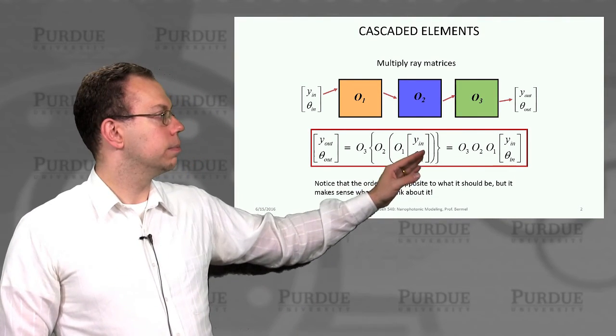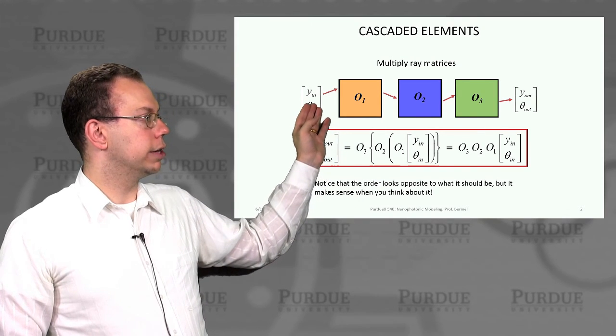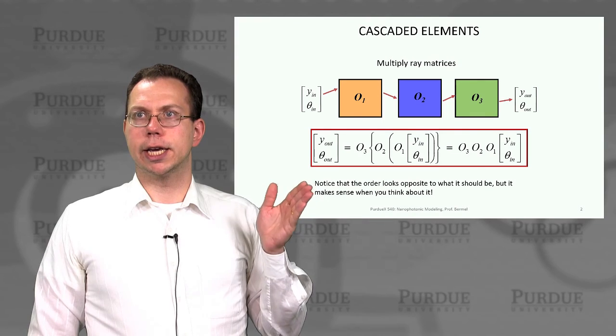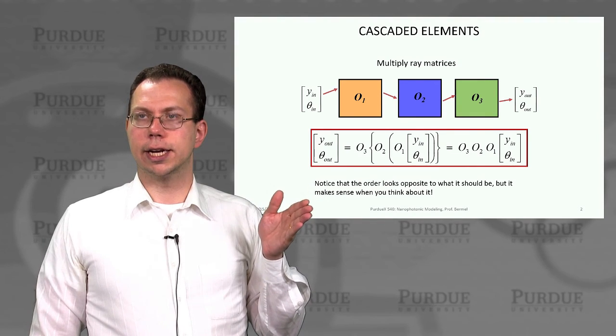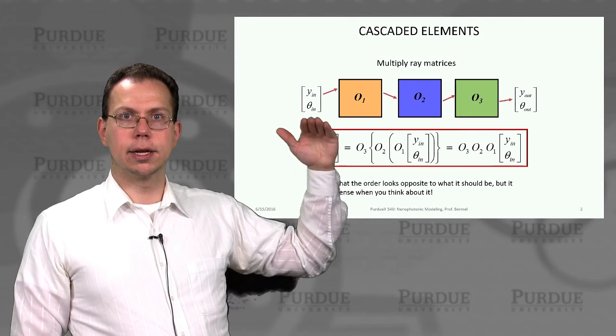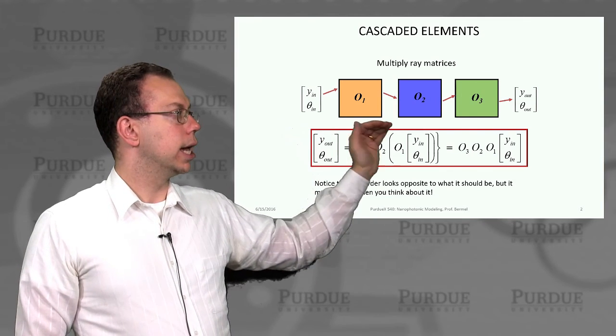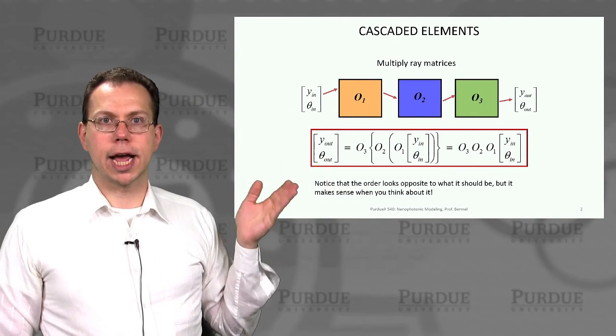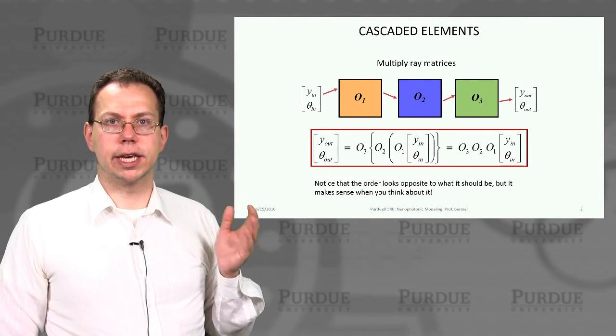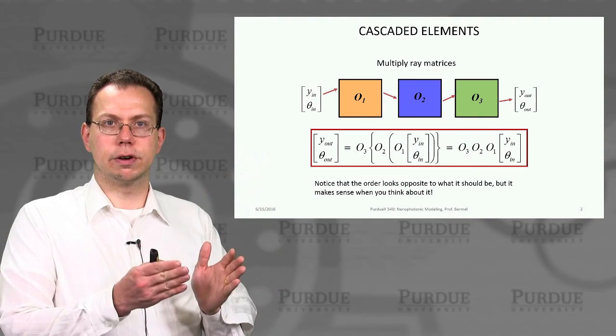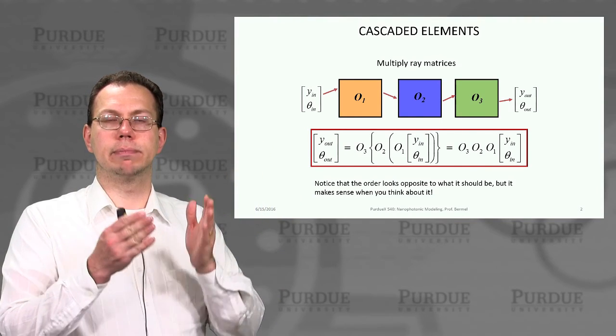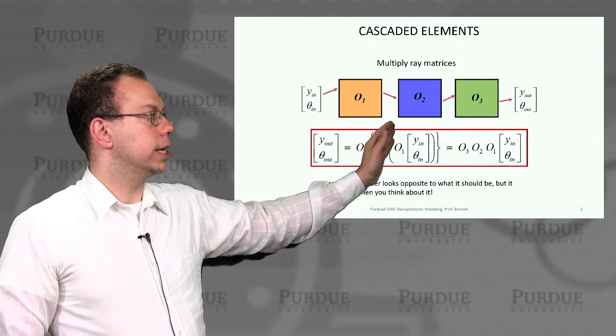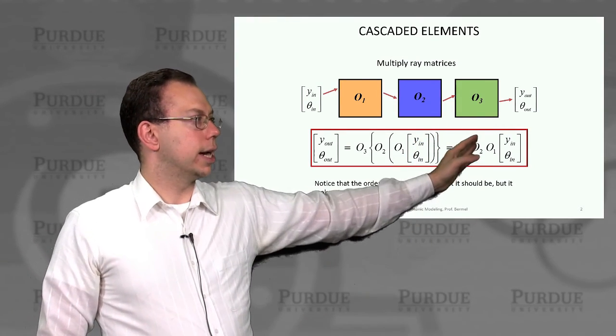You can see here basically the concept, which is that you have some sort of input system represented by height y_in and an angle theta_in. This is the ray coming into the system, and then it goes through different ray matrices. These ray matrices are an abstract representation of actual elements, like propagating through free space or high index medium, or like a curved surface or thin lens, and so on. Then you multiply all these together until you get to the output.